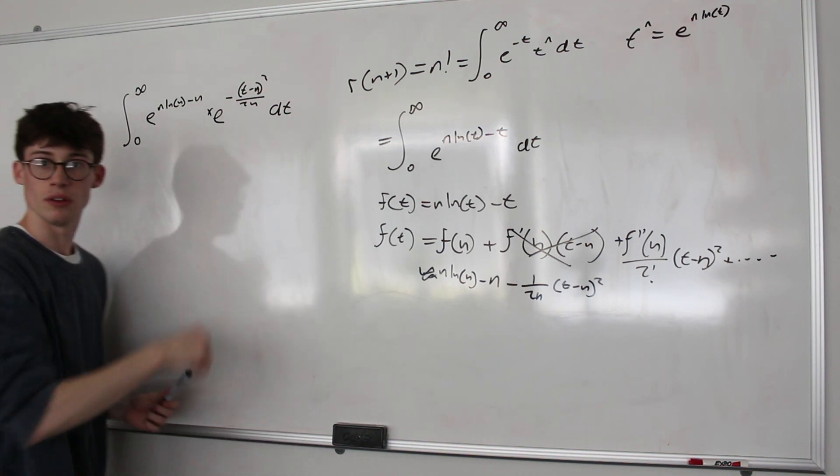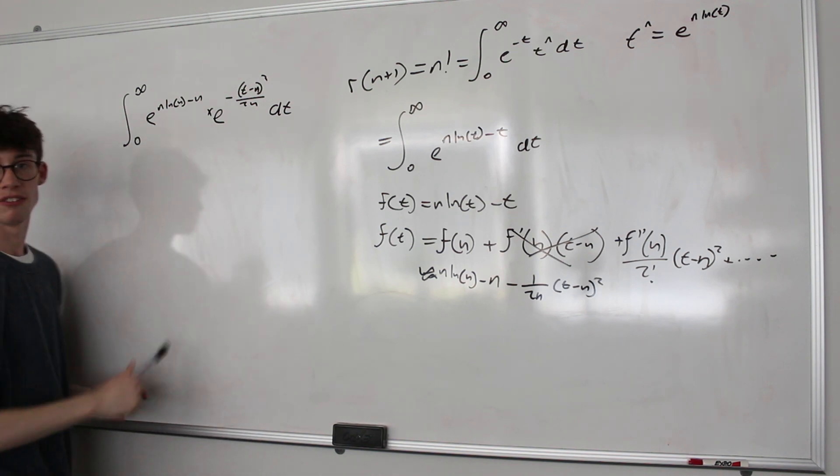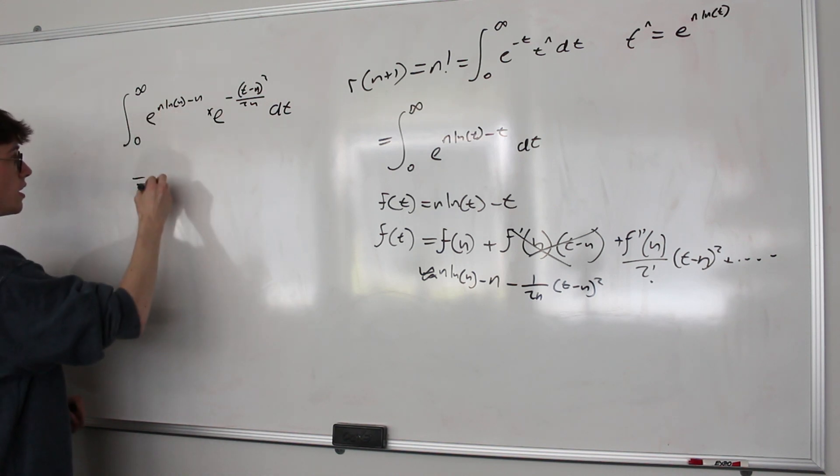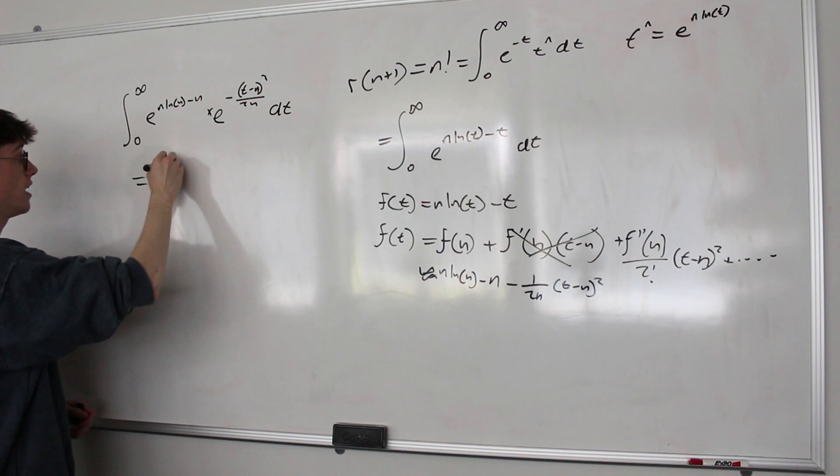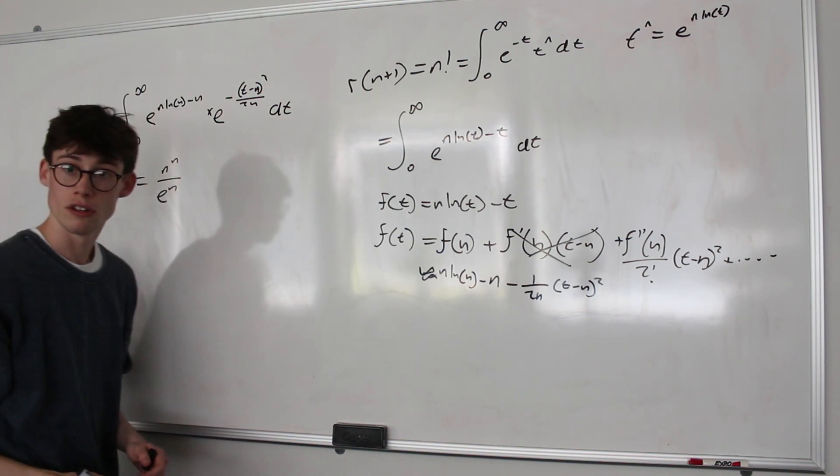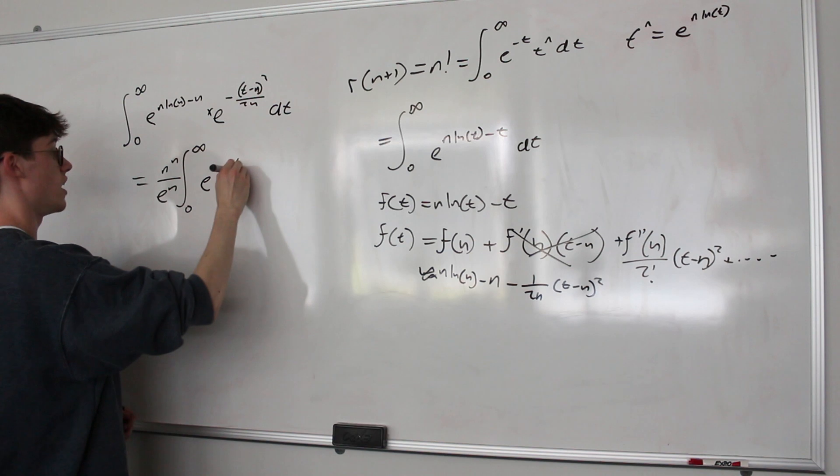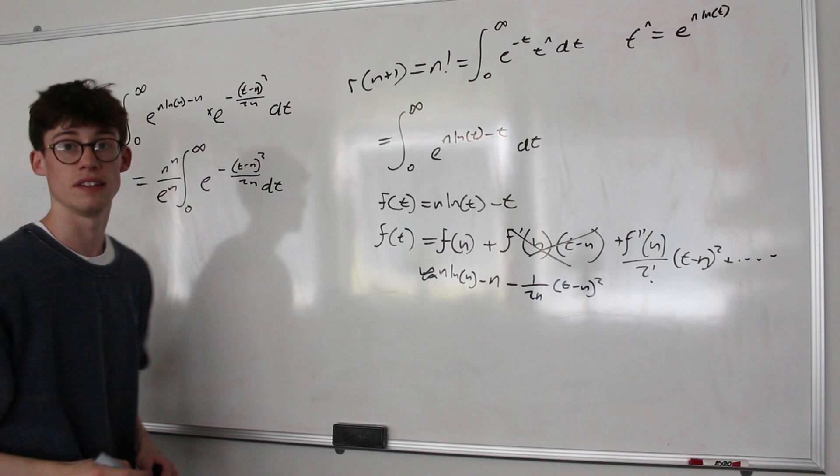Now given that we're integrating with respect to t, this entire part of the integral here is a constant because it's all in terms of n. So let's take it out. e to the power of n ln n is n to the n, and e to the power of negative n is 1 over e to the n. So that's the constant we're pulling out. And that's being multiplied by the integral from 0 to infinity of e to the negative t minus n squared over 2n with respect to t.